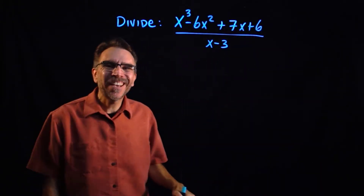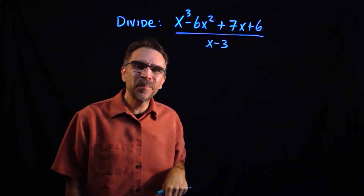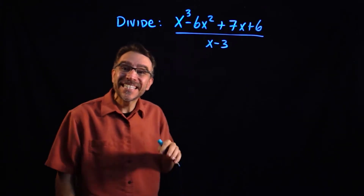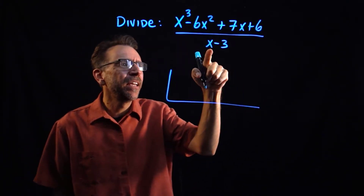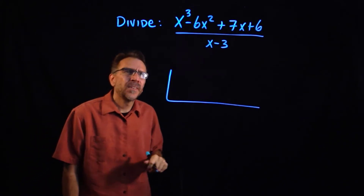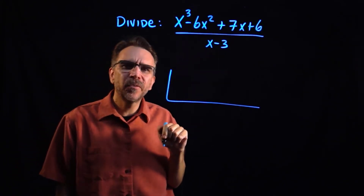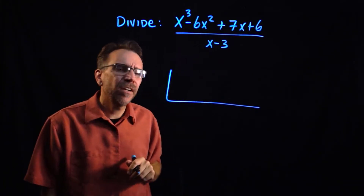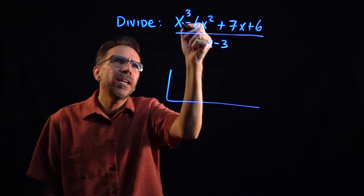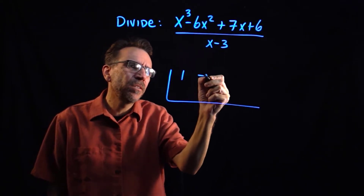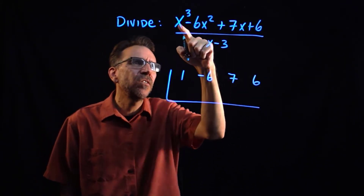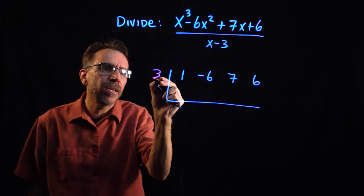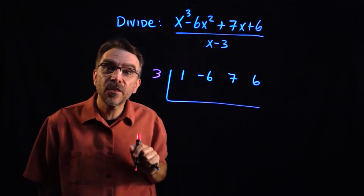Here we're asked to divide x cubed minus 6x squared plus 7x plus 6 by x minus 3. This is set up for synthetic division since we have a linear divisor of the form x minus a. The first row consists of the coefficients of the dividend: 1, negative 6, 7, and 6. Then we write the root — since we have x minus 3, the root is 3.